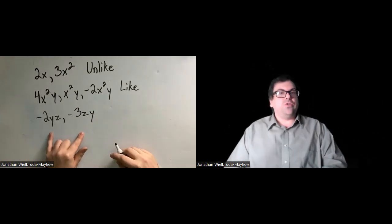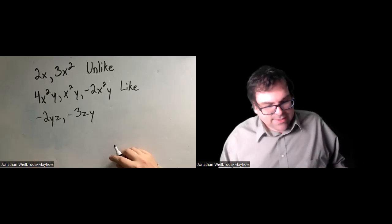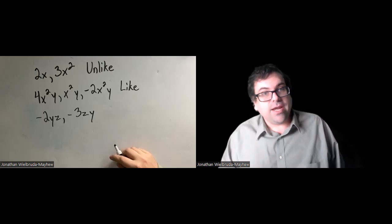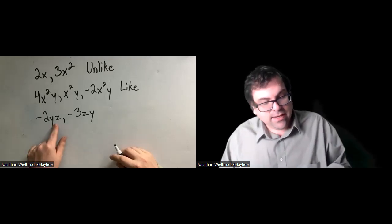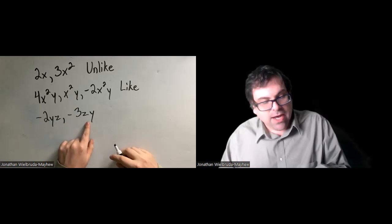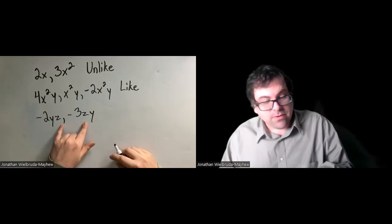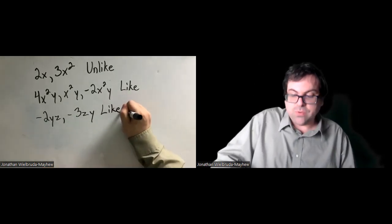We have negative 2yz and negative 3zy. At first you might say yz isn't the same as zy — these are unlike terms. But this one is trying to trick you. Remember by the commutative property of multiplication, yz is the same as zy. We can multiply in any order. So this is the same variables raised to the same powers — the order didn't matter. These are actually like terms.